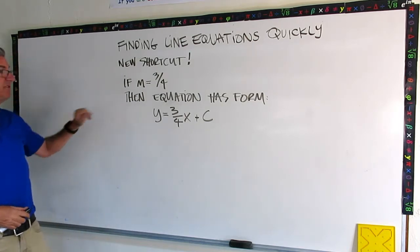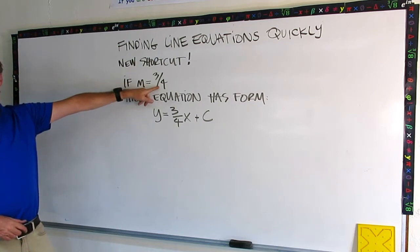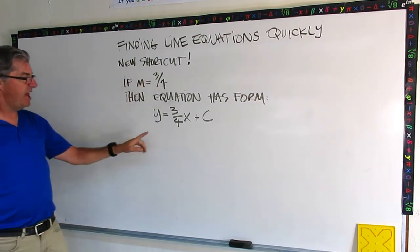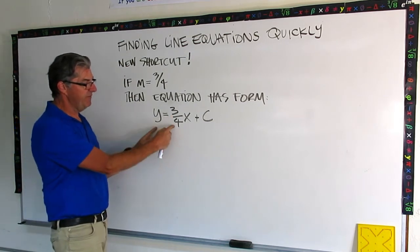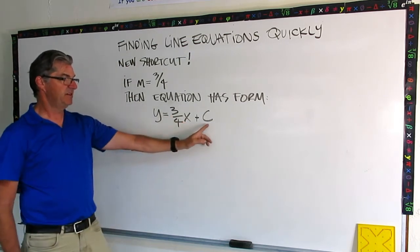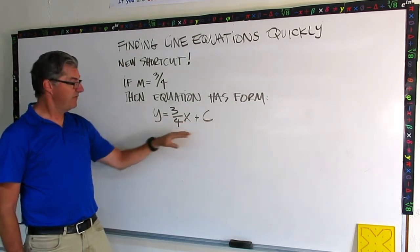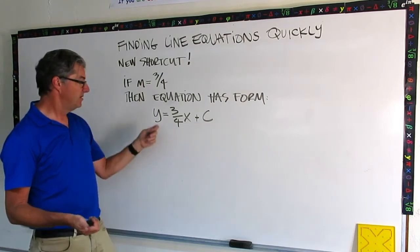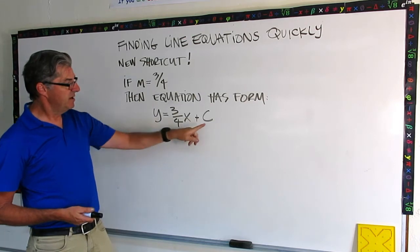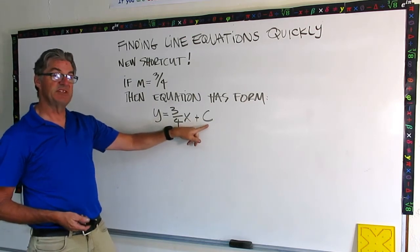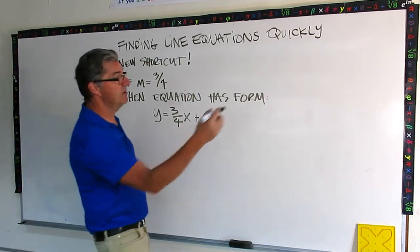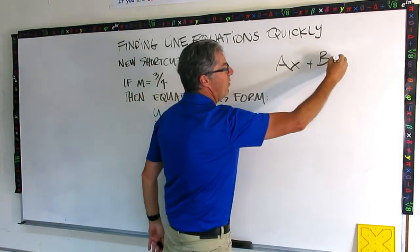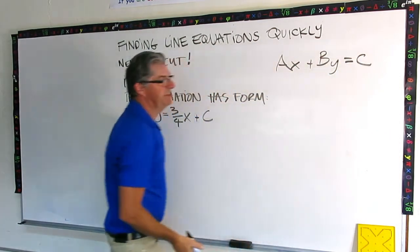Let's get started. So our new shortcut, here it is. If the slope is three-fourths, which is telling you the slope of a certain line, then the equation has to have this form: y equals three-fourths x plus c. Now if you look at this form, you can see that's just the slope intercept form. Solve for y. So the c stands for the constant in general form. Remember, general form looks like this: Ax plus By equals C.